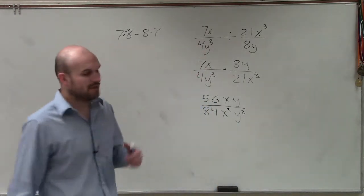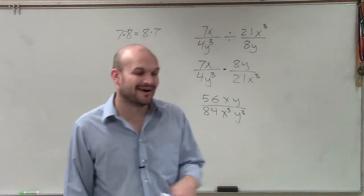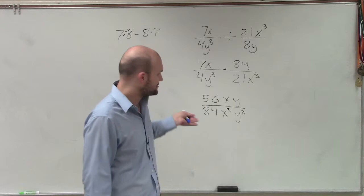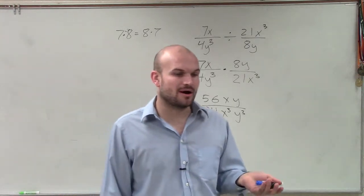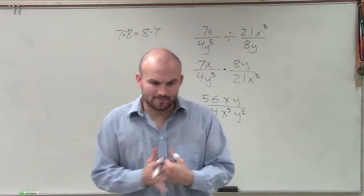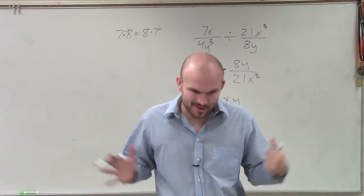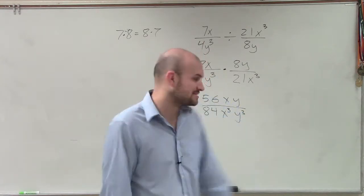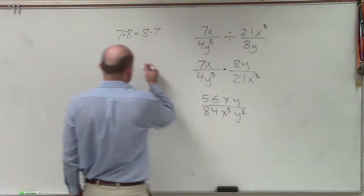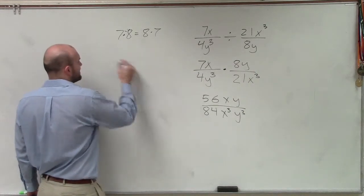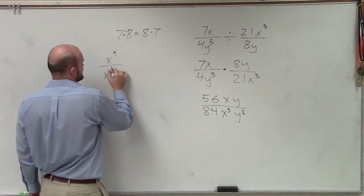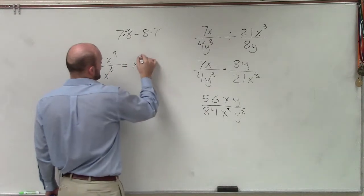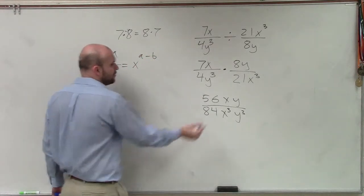Now remember, when multiplying, dividing, simplifying our rational expressions, we have to remember our rules of exponents. When I'm dividing, if I have x to the a divided by x to the b, that's going to turn into x to the a minus b. Well, in this case, these don't appear to have exponents, but they do. They have exponents of 1.